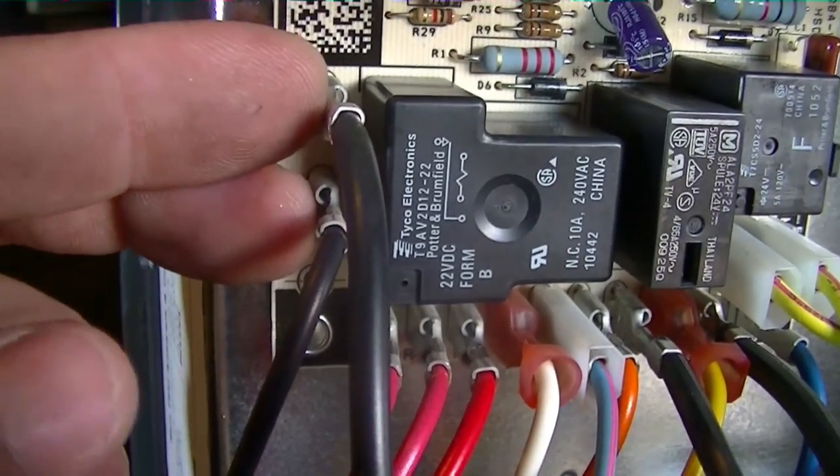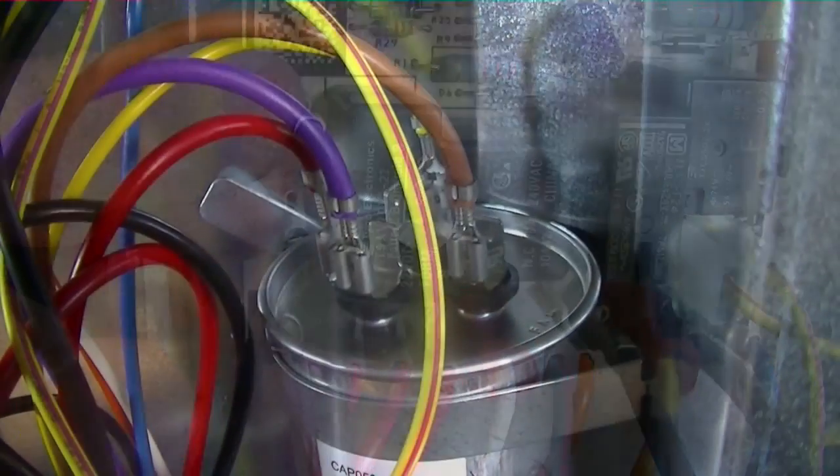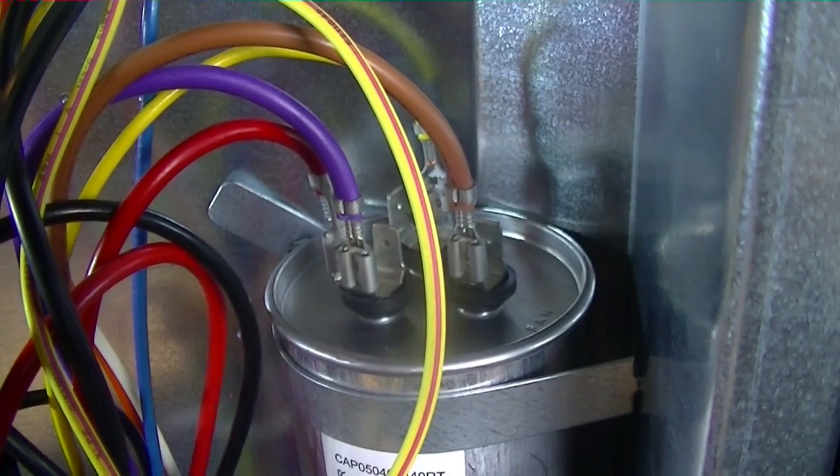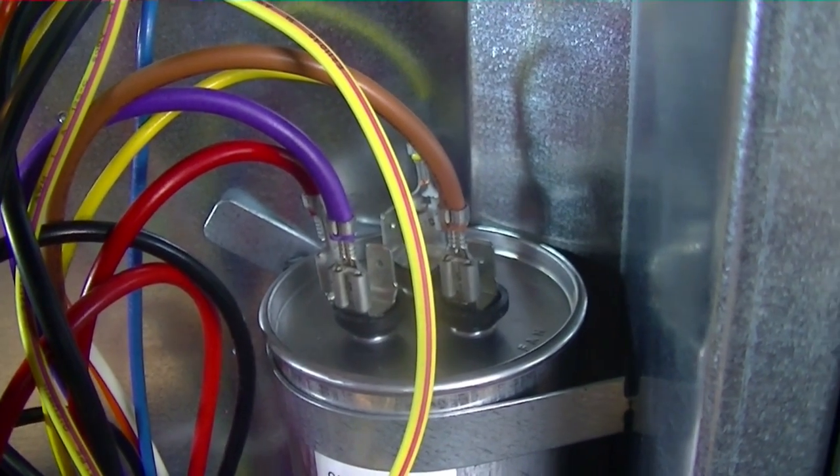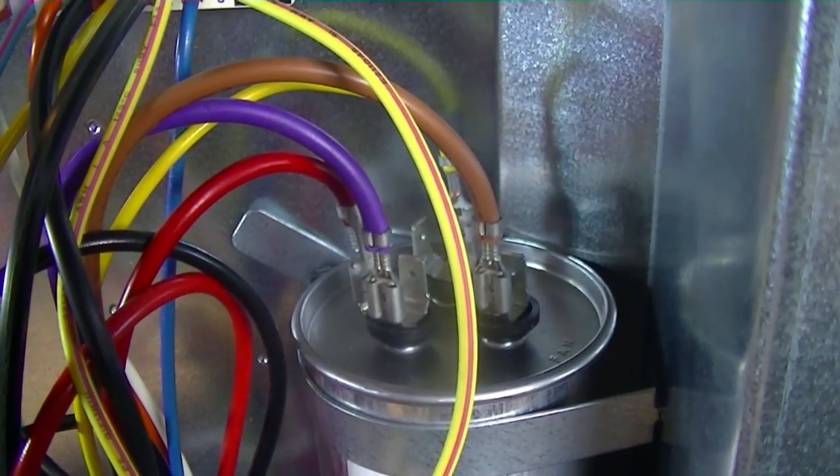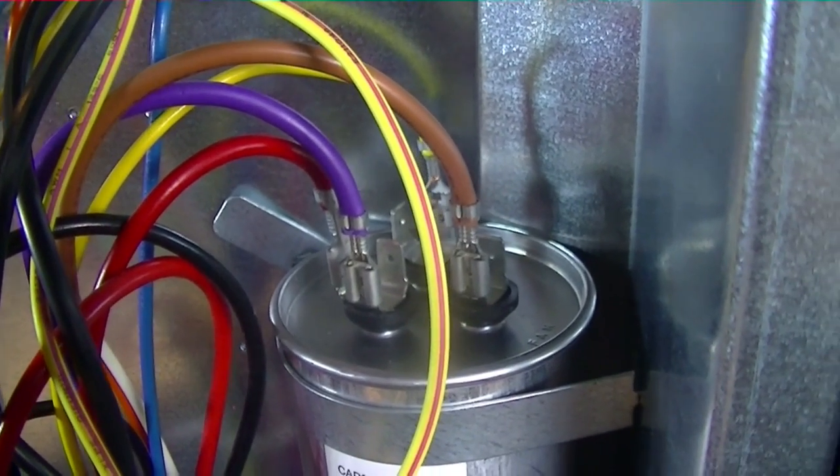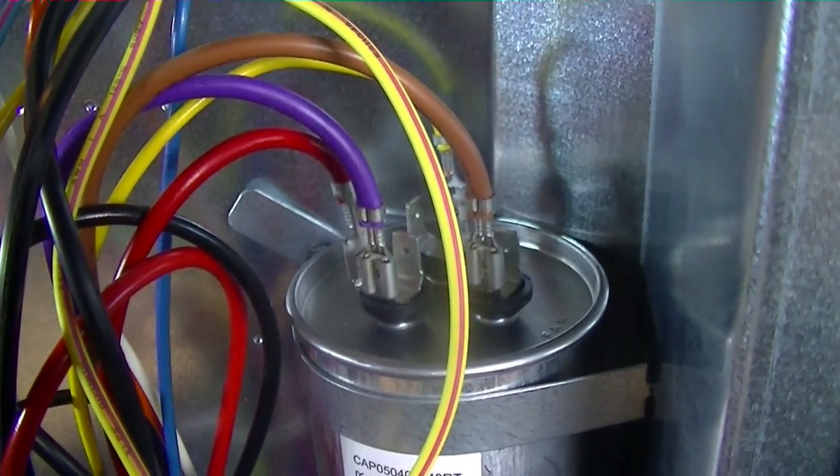One leg is going to the outdoor fan motor, one leg is going to the contactor. Both the purple, or run, from the fan motor, and the brown, or the start from the fan motor, go directly to the capacitor.